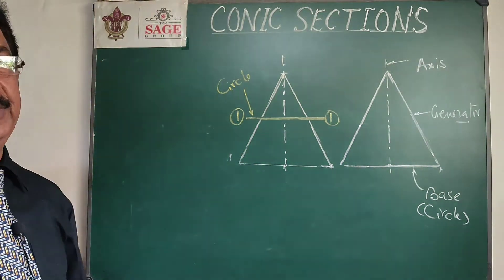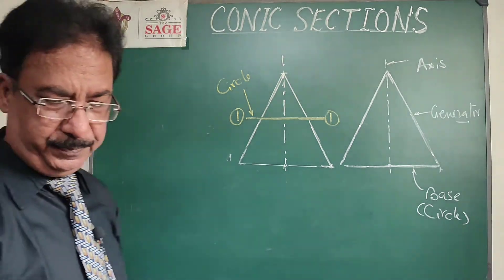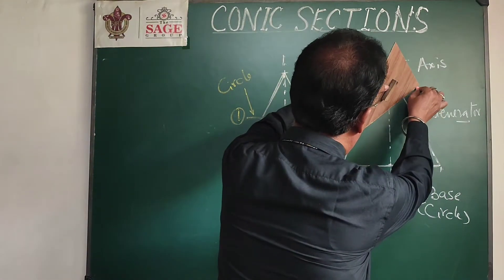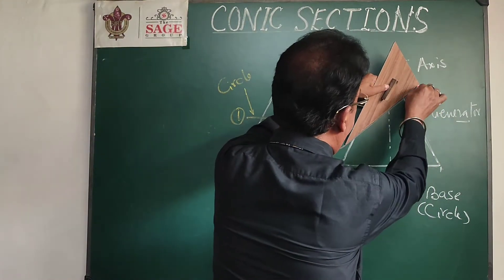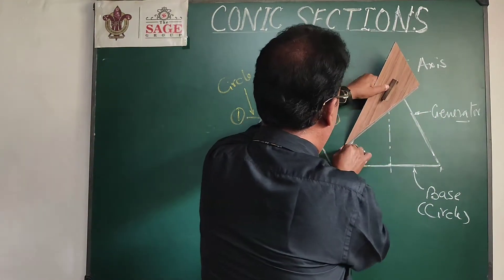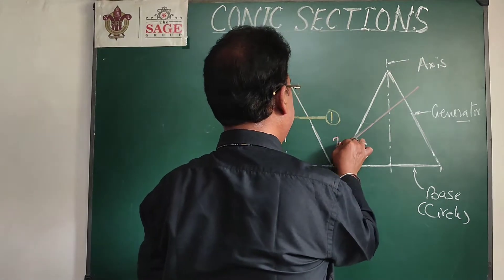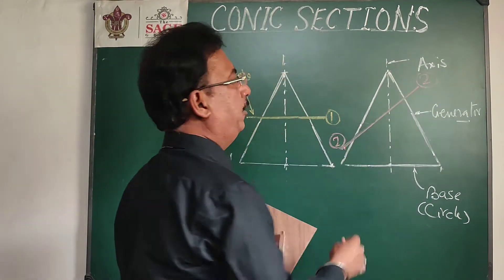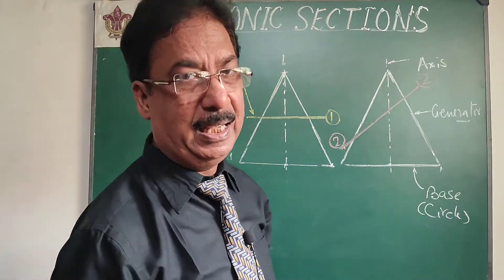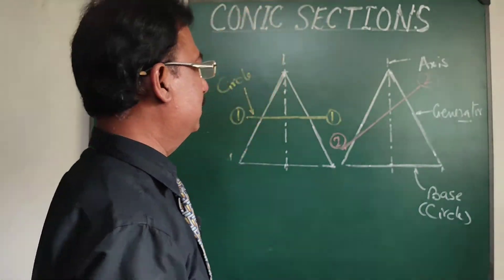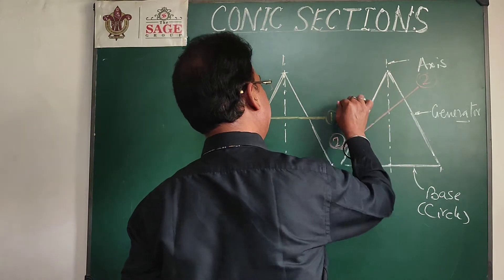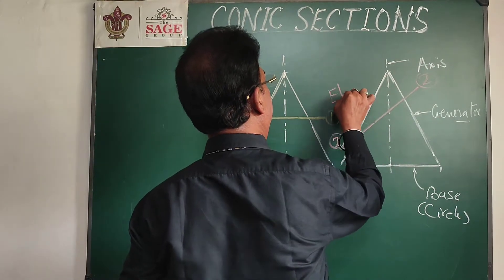Another option is plane number two, where the section plane is inclined to the base and cuts all the generators. In this case, the section obtained will be an ellipse.